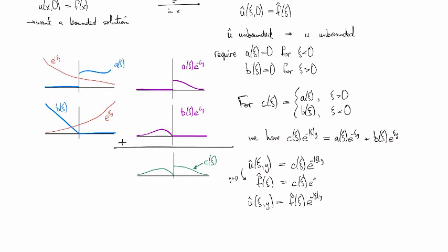And now it just remains to take it back across the Fourier transform, so we take the inverse Fourier transform, and we have u x y is going to be the inverse Fourier transform of e to the minus xi y, convolved with the inverse Fourier transform of f hat, which is f.